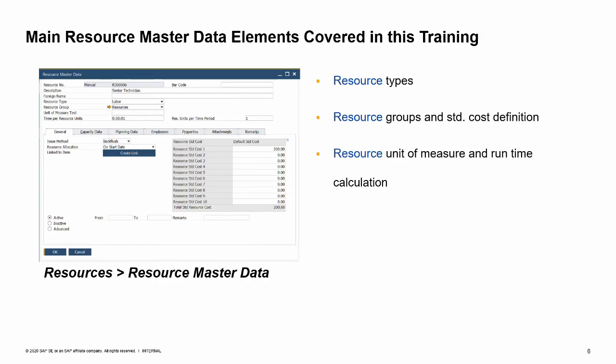This image shows resource master data, where you can define important data such as resource type and group, resource unit of measure, and resource capacity. In this topic, we will cover three aspects: resource types, resource groups, and resource unit of measure and runtime calculation. Resource capacity management is covered in the resource capacity course topic.